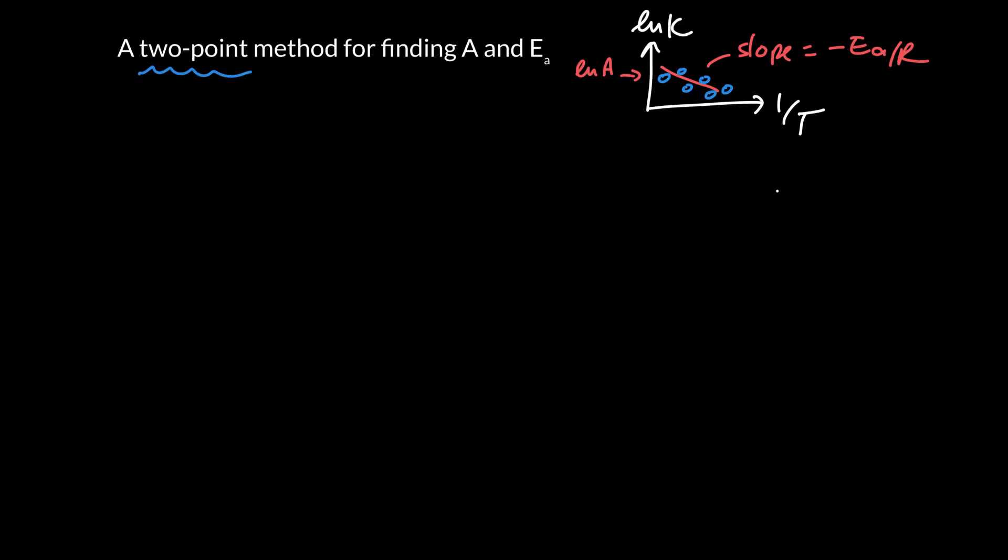But what happens if you've only got two measurements? So there's actually a really terrible way that unfortunately is really common, so I'll go ahead and show it to you, but I think it's really terrible. There's a really terrible two-point method for finding those two things, the pre-exponential factor and the activation energy.